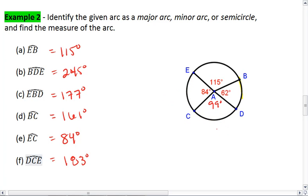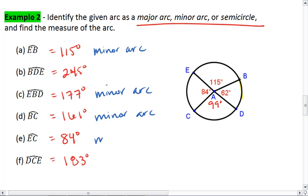Last part of this problem, I need to tell whether these arcs are a major arc, minor arc, or a semicircle. I just go through—anything that's less than 180 degrees is a minor arc. Anything that's equal to 180 would be a semicircle, but we don't have any of those in this example. Anything that's greater than 180 degrees is a major arc. And that completes example two.